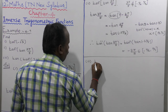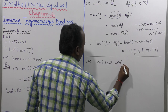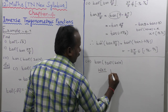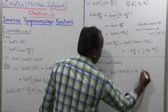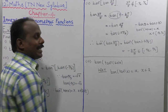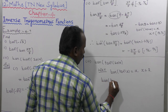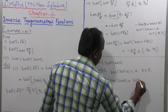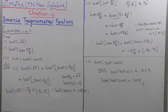The third subdivision is tan of tan inverse of 2019. We know the formula tan(tan inverse of x) = x, where x belongs to all real numbers ℝ. Since 2019 belongs to ℝ, this directly gives tan of tan inverse of 2019 equals 2019. That is the answer for the third subdivision. Thank you.